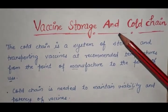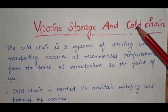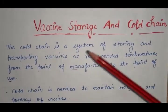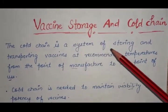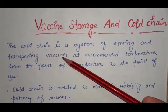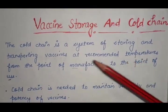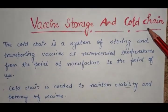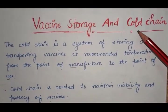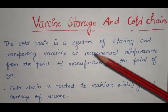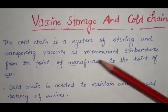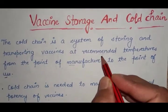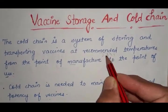Hello students, in this video we will discuss vaccine storage and the cold chain. First we will see what is meant by cold chain. The cold chain is a system of storing and transporting vaccines at recommended temperature from the point of manufacture to the point of use. The recommended temperature is 2 to 8 degrees Celsius.